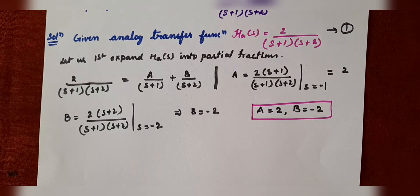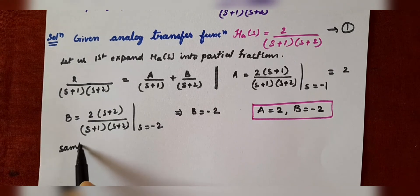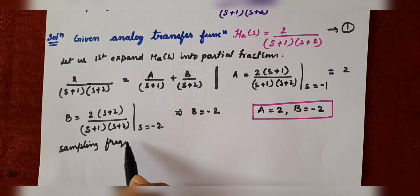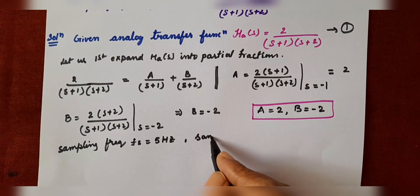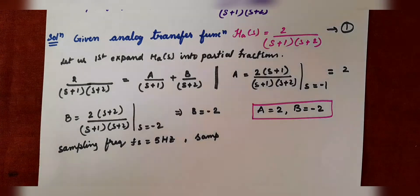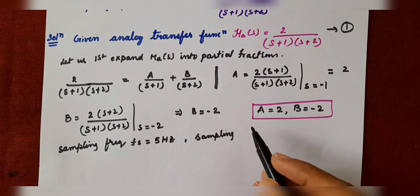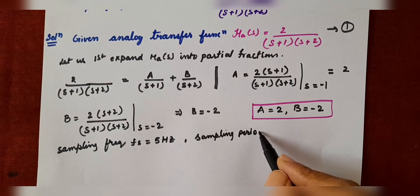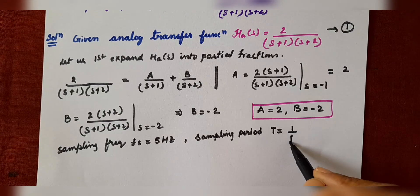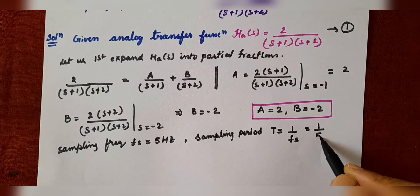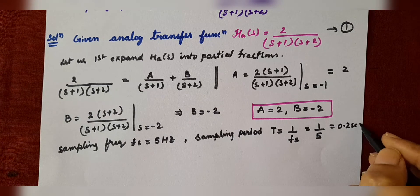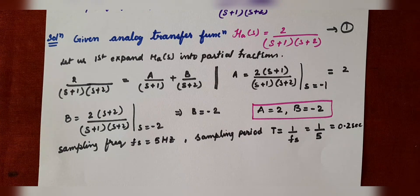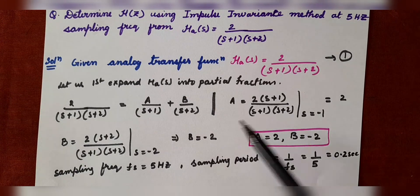What is the sampling frequency given to us? Sampling frequency f_s is given as 5 Hz. Find the sampling period: T = 1/f_s = 1/5 = 0.2 seconds. So we have written H_a(s) in partial fractions, found A and B, and computed the sampling period.